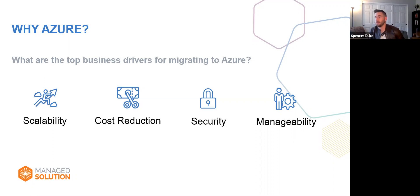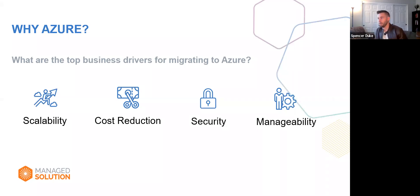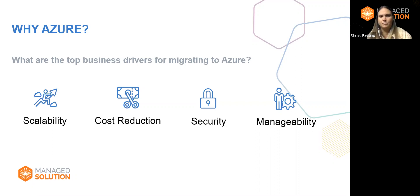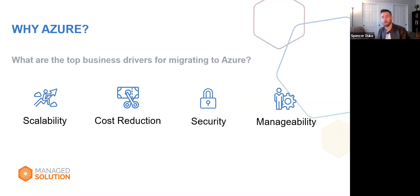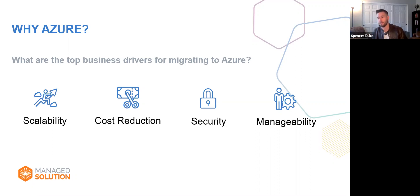Completely agree. With that example — like you mentioned Secure Score — if you had your network open or port 3389 available to the public internet, that would be a red flag. Azure Security Center would pick that up real quick and probably throw a bunch of red flags at you.